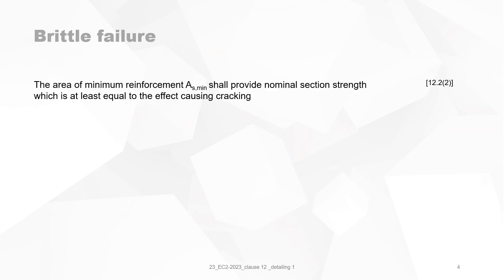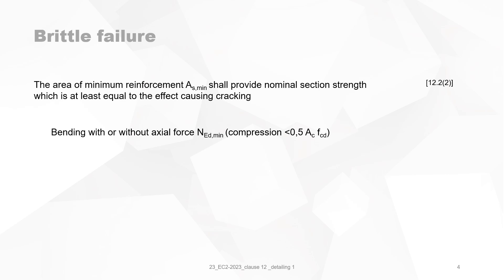The area of minimum reinforcement AS min shall provide nominal section strength which is at least equal to the effect causing cracking. This seems to be the same definition we have seen in clause 9. Just remember that clause 9 is always SLS calculation and clause 12 is always ULS — ultimate limit state.